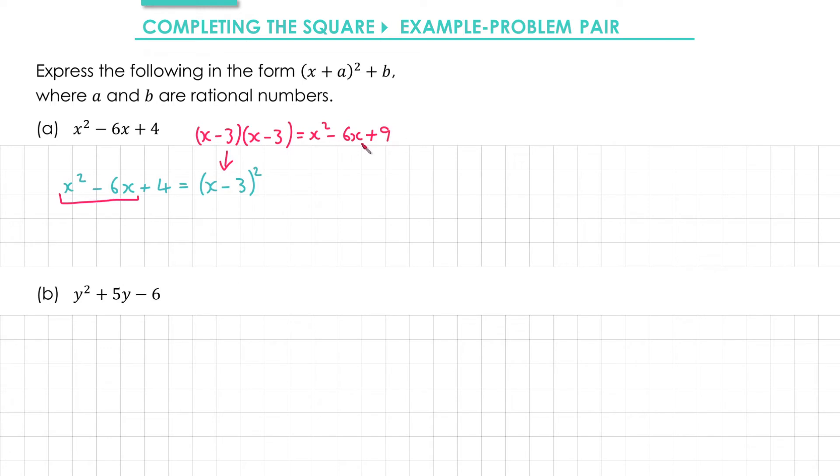To get the middle term minus 6x we could do x times minus 3 and then double it because there were two terms the same inside these brackets when we expanded them. And that fact is key to completing the square.